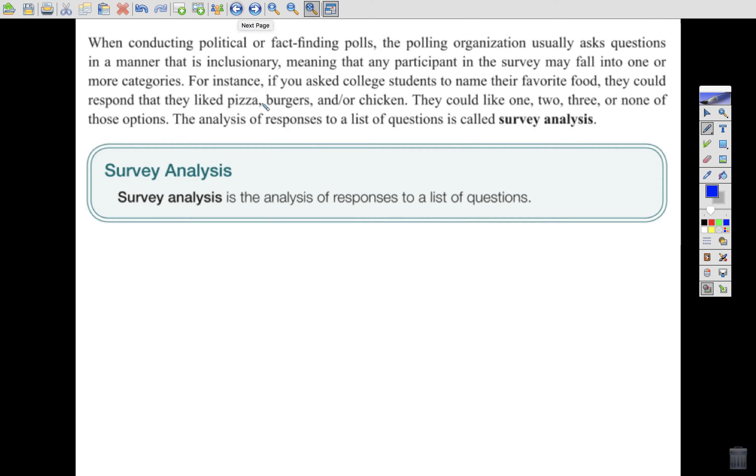All right? When conducting political or fact-finding polls, the polling organization usually asks questions in a manner that is inclusionary, meaning that any participant in the survey may fall into one or more categories. For instance, if you ask college students to name their favorite food, they could respond that they like pizza, burgers, and or chicken. They could like one, two, three, or none of those options. The analysis of responses to a list of questions is called survey analysis. Survey analysis is the analysis of responses to a list of questions. So let's go ahead and do some survey analysis.